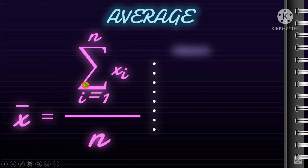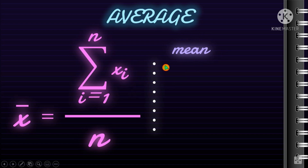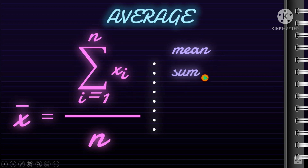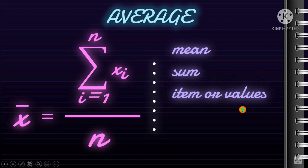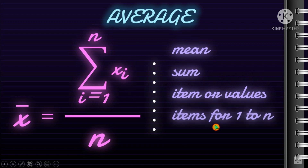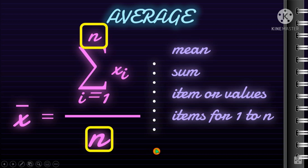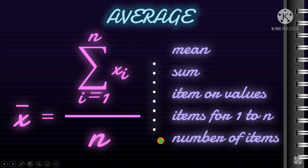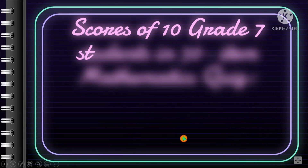This formula may look very difficult, but it's not. X-bar is the symbol for mean. The sigma symbol — that sideways M — is the symbol for summation. The notation where i equals 1 represents the starting item or value, and x-sub-i represents the items from 1 to n, which are the values we will add up. N is the number of items or observations.